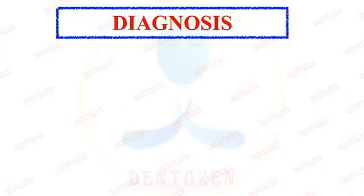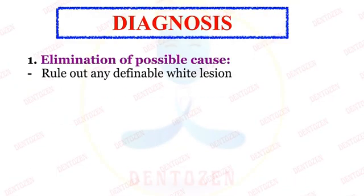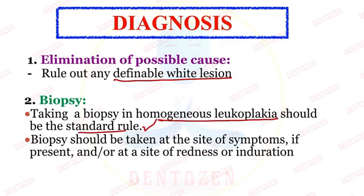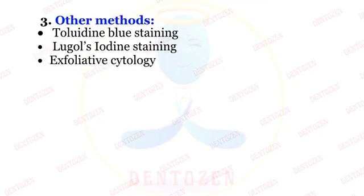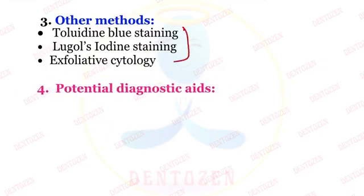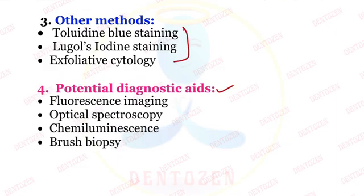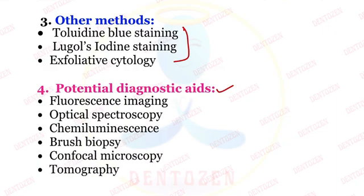Now the diagnosis of leukoplakia. Elimination of the possible cause, by ruling out any other definable white lesion, can give us the diagnosis. Second is biopsy — in homogeneous leukoplakia, biopsy should be taken from the most representative site, especially where symptoms are present or at sites of redness or induration. Other diagnostic aids include toluidine blue staining, Lugol's iodine staining, and exfoliative cytology. Additional potential aids are fluorescent imaging, optical spectroscopy, chemiluminescence, brush biopsy, and confocal microscopy.